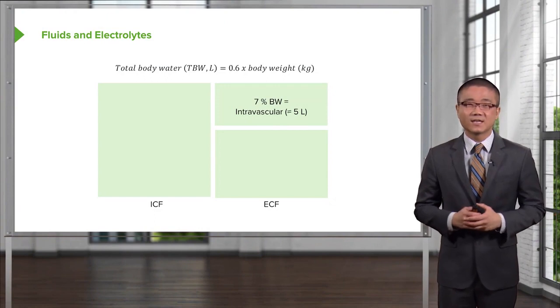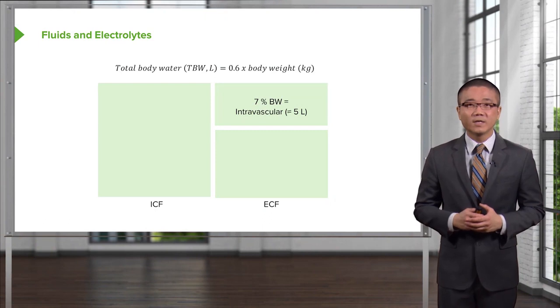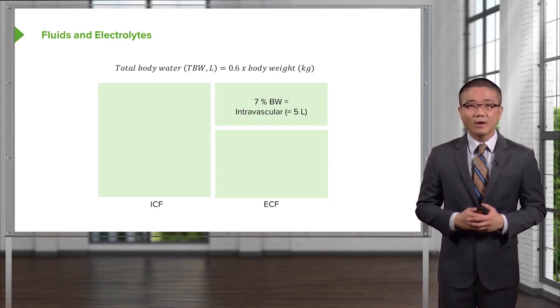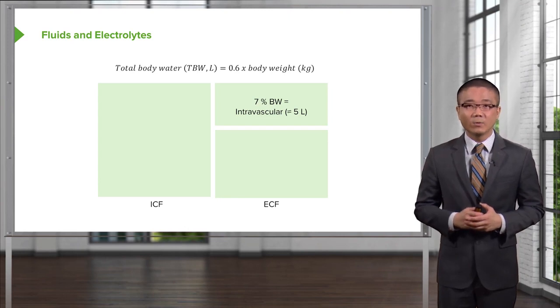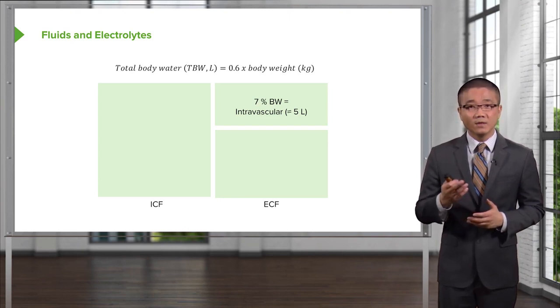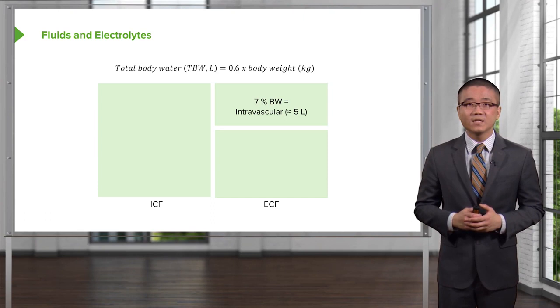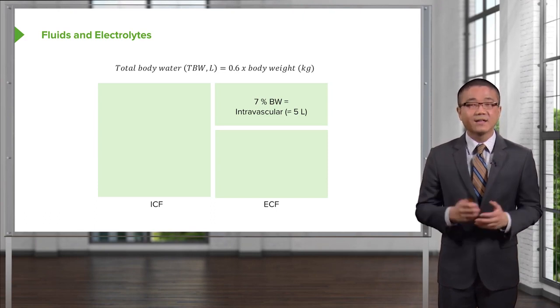Let's start the discussion by an estimation of total body water. Total body water when expressed in liters is approximately two-thirds or 0.6 times your total body weight in kilograms. For example, a standard 70 kilo patient would have approximately 42 liters of fluid. That's a lot of fluid.